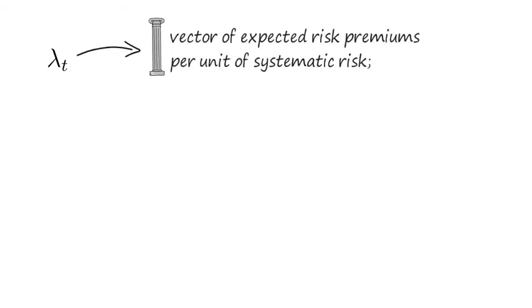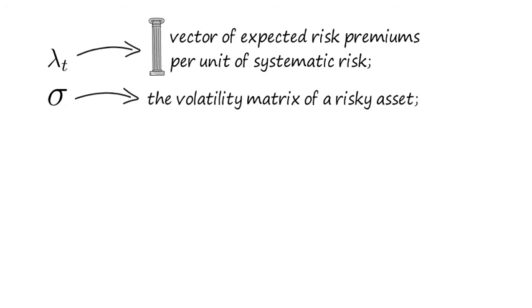Now since lambda t is a column vector of ex-ante expected risk premiums per unit of systematic risk, and since sigma is the volatility matrix of risky assets, it's not surprising to note that the expected risk premium for risky assets,